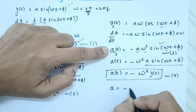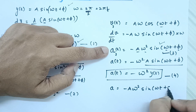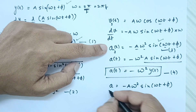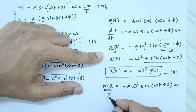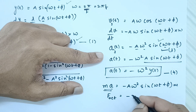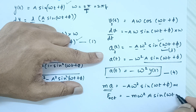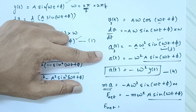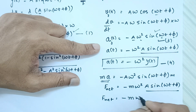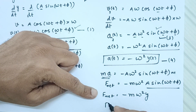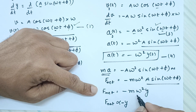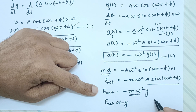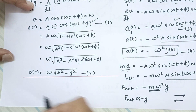Since acceleration = −a·ω²·sin(ωt + φ), multiplying both sides by m — the mass of the oscillating particle — gives m·a = F_net = −m·ω²·a·sin(ωt + φ), which can be written as −m·ω²·y. So for SHM, the net force responsible for bringing the particle back to the mean position is proportional to −y. The negative sign means the force direction is opposite to the displacement direction. So F_net ∝ −y.